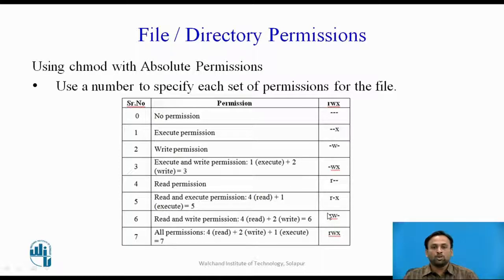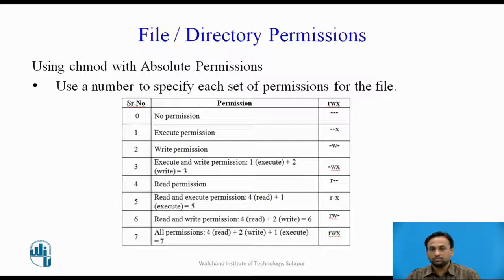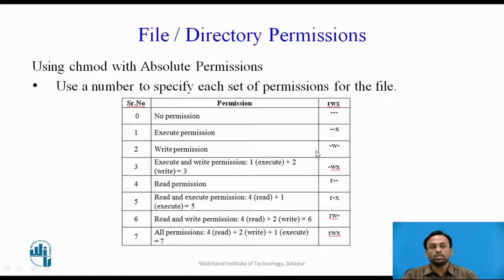In absolute mode, the second way to modify permissions, the chmod command uses numbers to specify each set of permissions. Each permission is assigned a value: no permission is represented as dashes (---), execute is X, write is W, read is R, and a file with all read, write, and execute permissions shows as RWX.